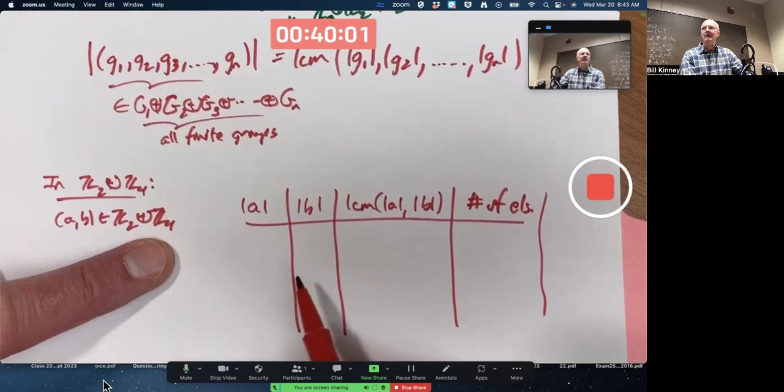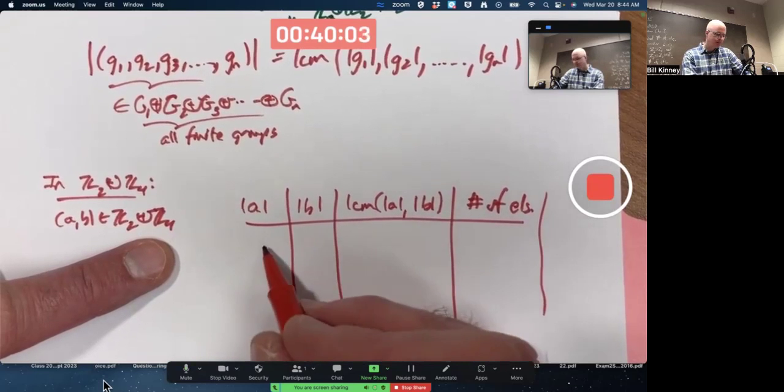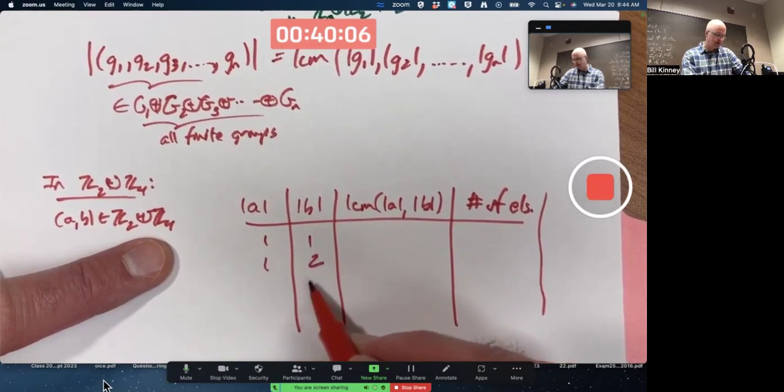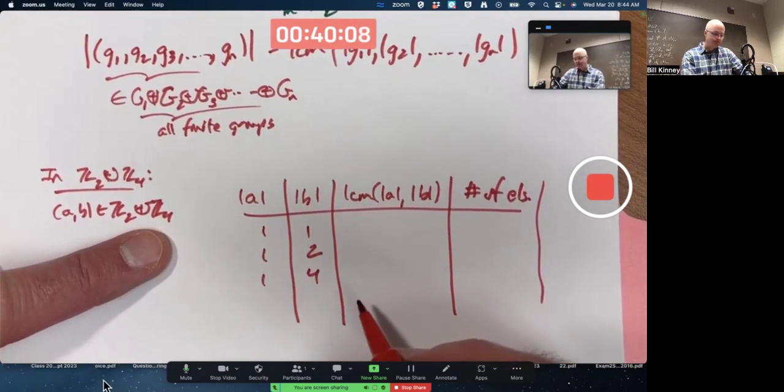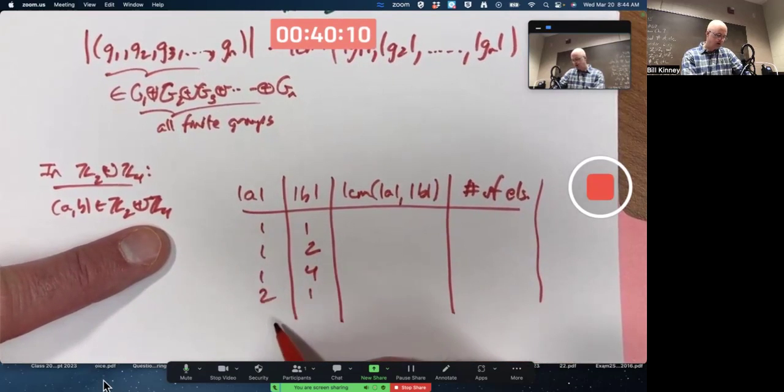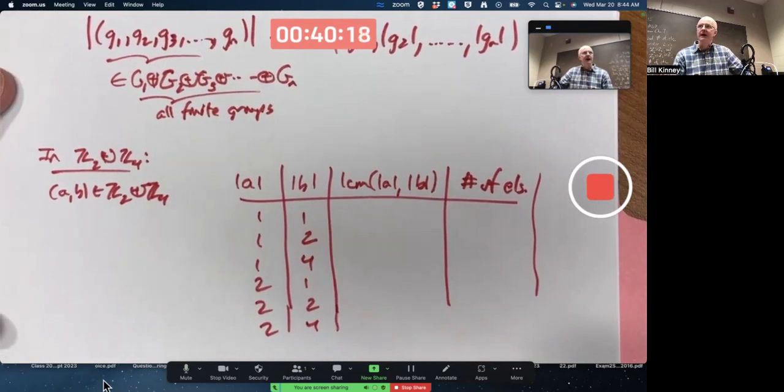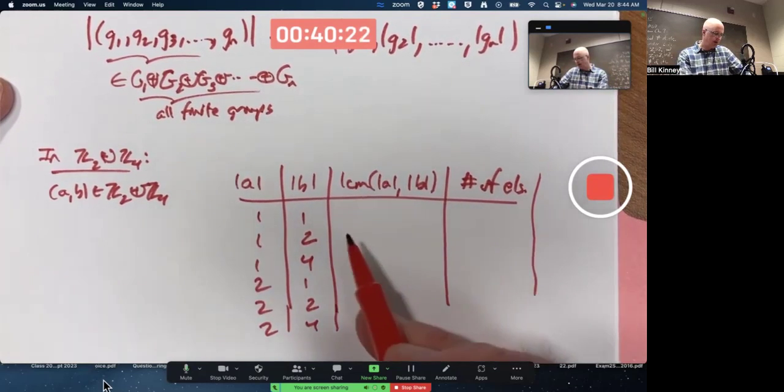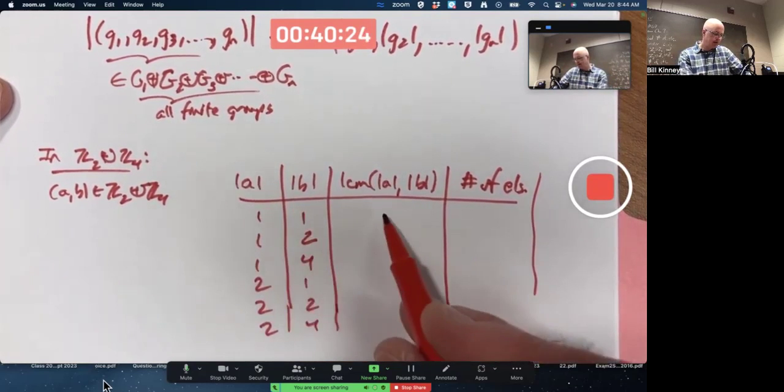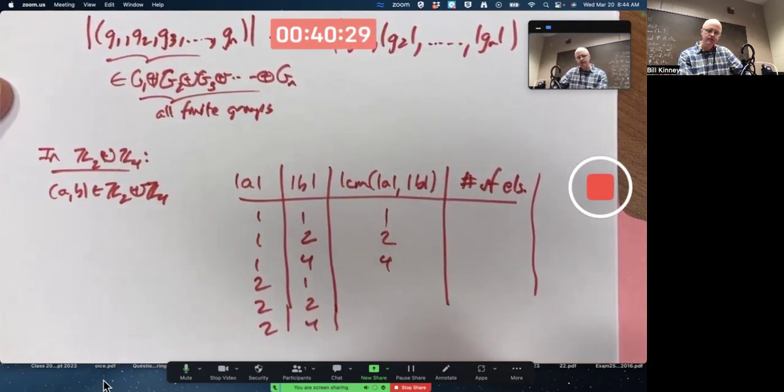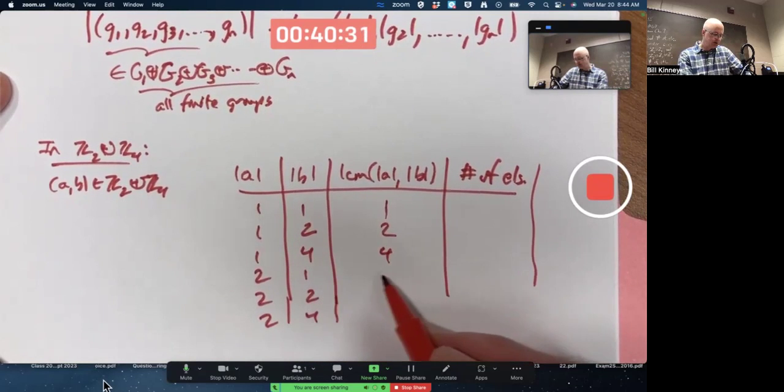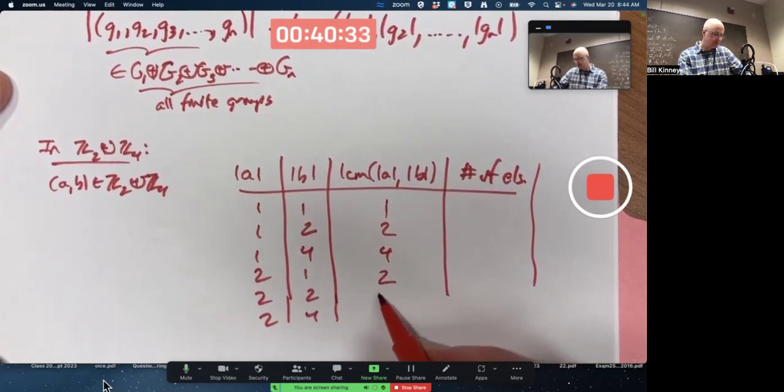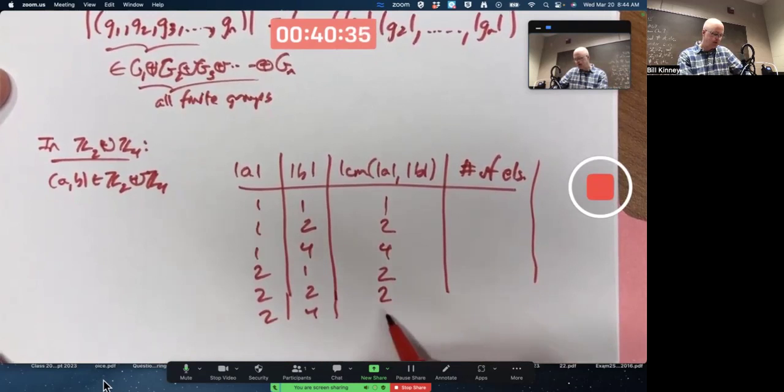Consider all possible combinations of those things. 1 and 1. 1 and 2. 1 and 4. 2 and 1. 2 and 2. 2 and 4 are the different possibilities. In each row, figure out the LCM. The LCM of 1 and 1 is 1. The LCM of 1 and 2 is 2. LCM of 1 and 4 is 4. LCM of 2 and 1 is 2. LCM of 2 and 2 is 2. LCM of 2 and 4 is 4.